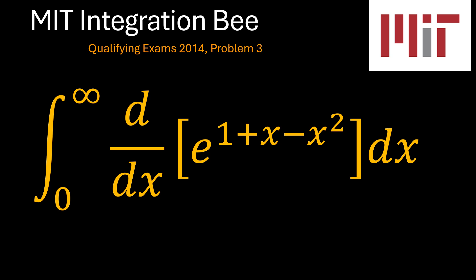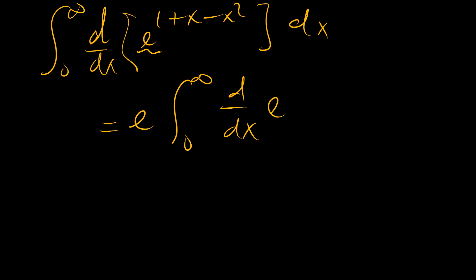So let's go ahead and begin with the easier method. Our problem is the integral from x equals 0 to x tending to infinity of the derivative of e to the power of 1 plus x minus x squared. The same as we can pull the e out, derivative of e to the power of x minus x squared.